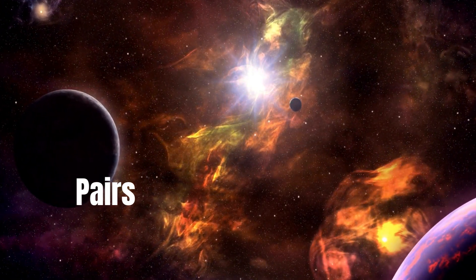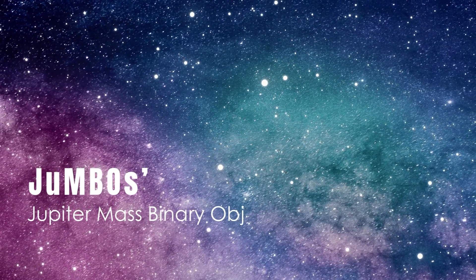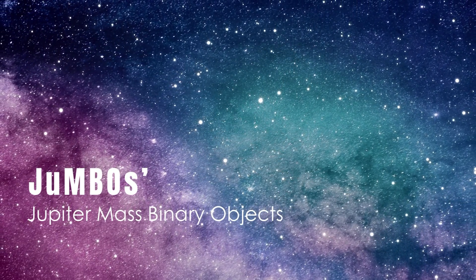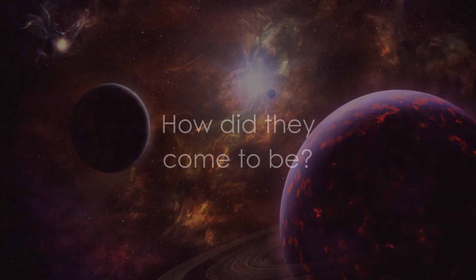They have been aptly named JuMBOs, short for Jupiter Mass Binary Objects. The question on everyone's mind: how did they come to be?